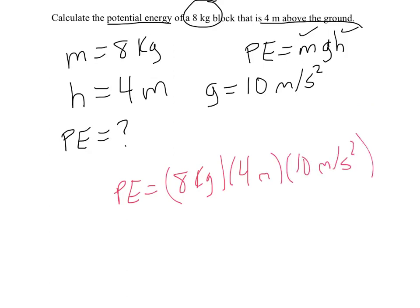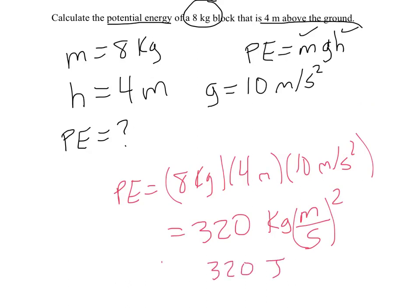When you do that, you get 320. If you plug in and work out all the units, you again get kilogram meters over seconds squared, which comes out to joules. So the potential energy is 320 joules. Bottom line: as long as your mass is in kilograms, your height is in meters, and your velocity is in meters per second, the units should work themselves out and you'll get joules.